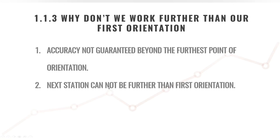The next station cannot be further than the first orientation, because you cannot guarantee the accuracies beyond that. Instead, place another traverse point forward and use your previous orientation point as the first orientation — effectively doubling your working distance. Try to create field methods that let you work further while maintaining known accuracies. If you're doing a resection or free station, it's not strictly required to start with the furthest point, but it's always recommended. Include as many control points as possible to work as accurately as possible.